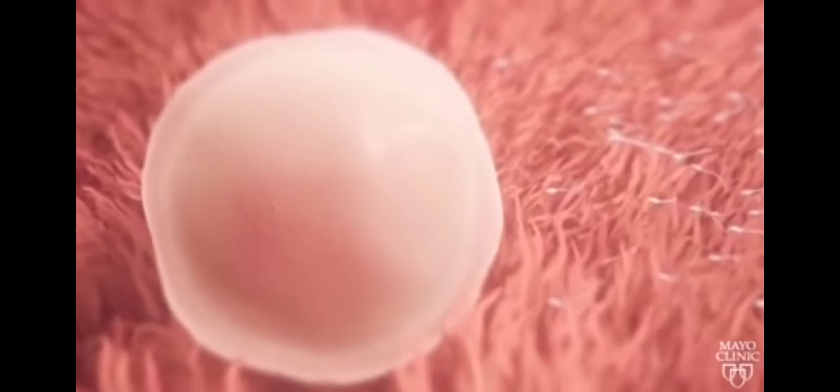If the egg is fertilized, the egg and sperm unite to form a one-celled entity called a zygote. As the zygote travels down the fallopian tube toward the uterus, it begins dividing rapidly to form a cluster of cells resembling a tiny raspberry.